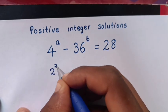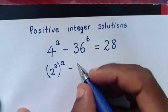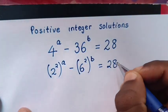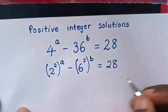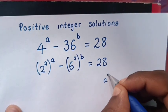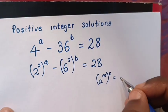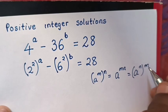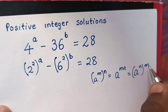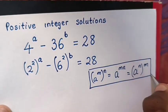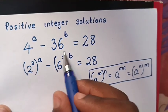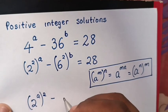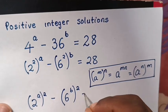4 is same as 2 power 2, bracket power a, minus 36 is same as 6 power 2, bracket power b, is equals to 28. We apply the exponential rule that a power m, bracket power n, equals a power mn — we multiply the powers. So we exchange the powers inside the bracket. It will be 2 power a, bracket power 2, minus 6 power b, bracket power 2, is equals to 28.